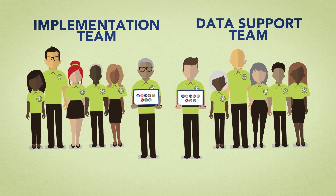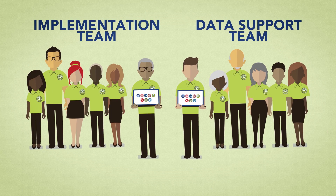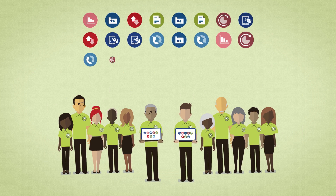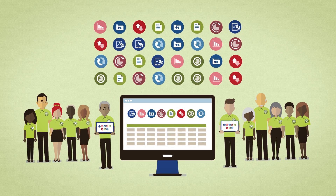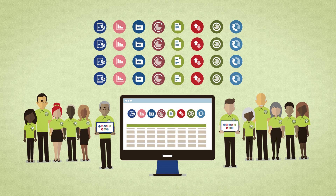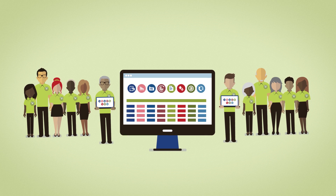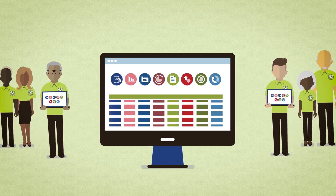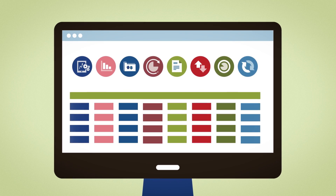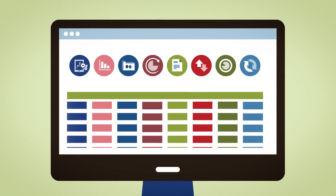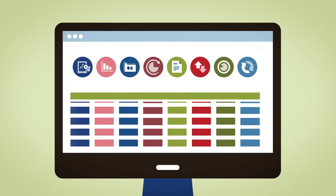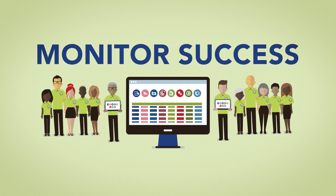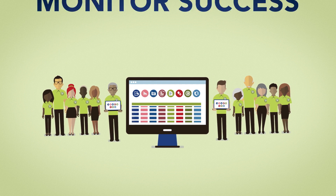The Greene County implementation and data support teams worked together to create a data collection process that included a simple spreadsheet to collect and track data on recruitment activities by type, number of potential resource families who inquired about foster care, and characteristics of these families. This allowed them to continually monitor the relative success of the recruitment activities.